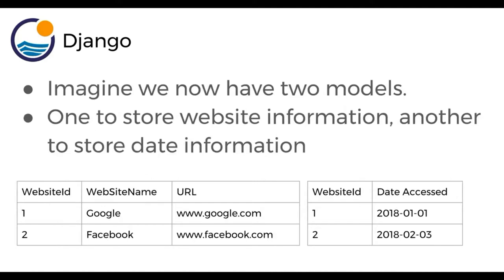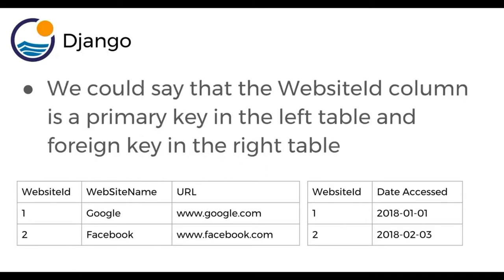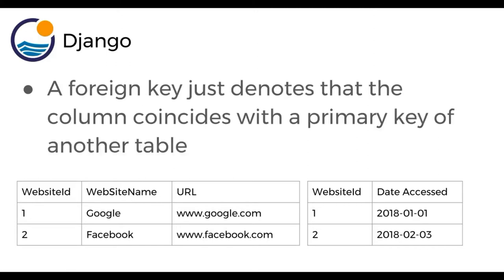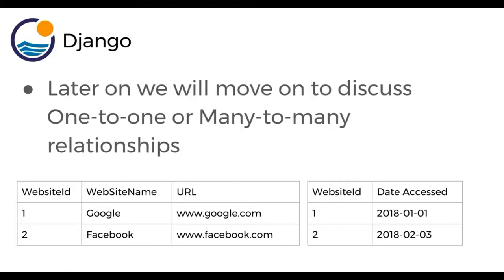So here on the left, we have the website ID, the website name, and the URL. On the right, we have the corresponding website ID and then date accessed. We could say that the website ID column is a primary key in the left table and a foreign key in the right table. A primary key is a unique identifier for each row in a table. A foreign key just denotes that the column coincides with a primary key of another table. Later on, we're going to move on to discuss things like one-to-one or many-to-many relationships, but for now this is all we really need to know.